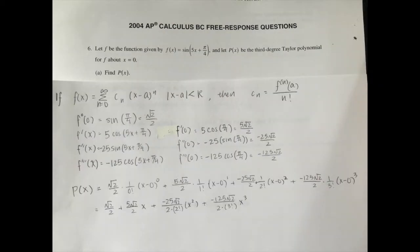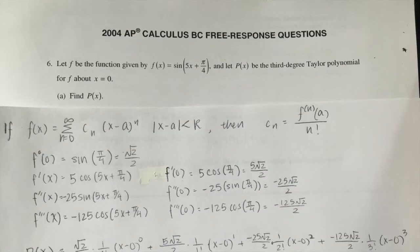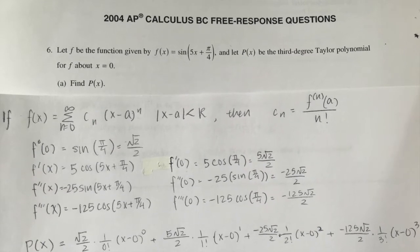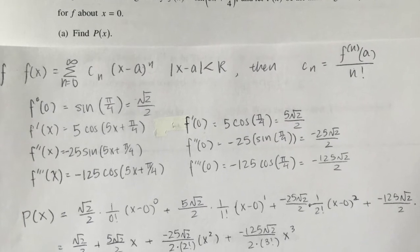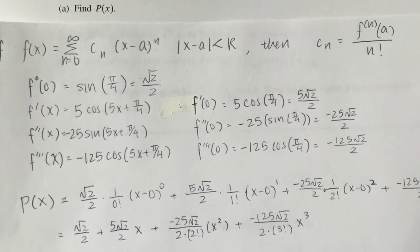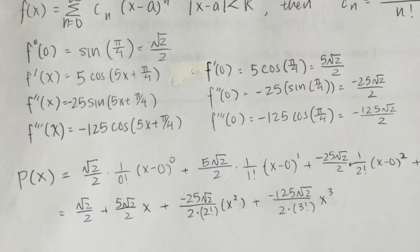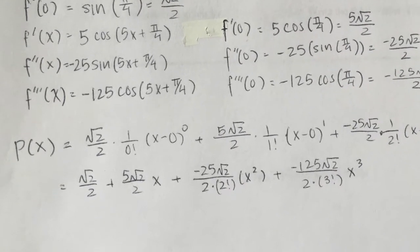After doing so, we can plug it back into the power series to find the third degree Taylor polynomial. Each of your terms would include your constant and x minus a, in this case 0, to the power of n. Make sure you don't forget to include n factorial in each of your constants. Our answer would then be p of x equals square root of 2 over 2 plus 5 square root of 2 over 2 x minus 25 square root of 2 over 2 times 2 factorial times x squared minus 125 square root of 2 over 2 times 3 factorial times x cubed.